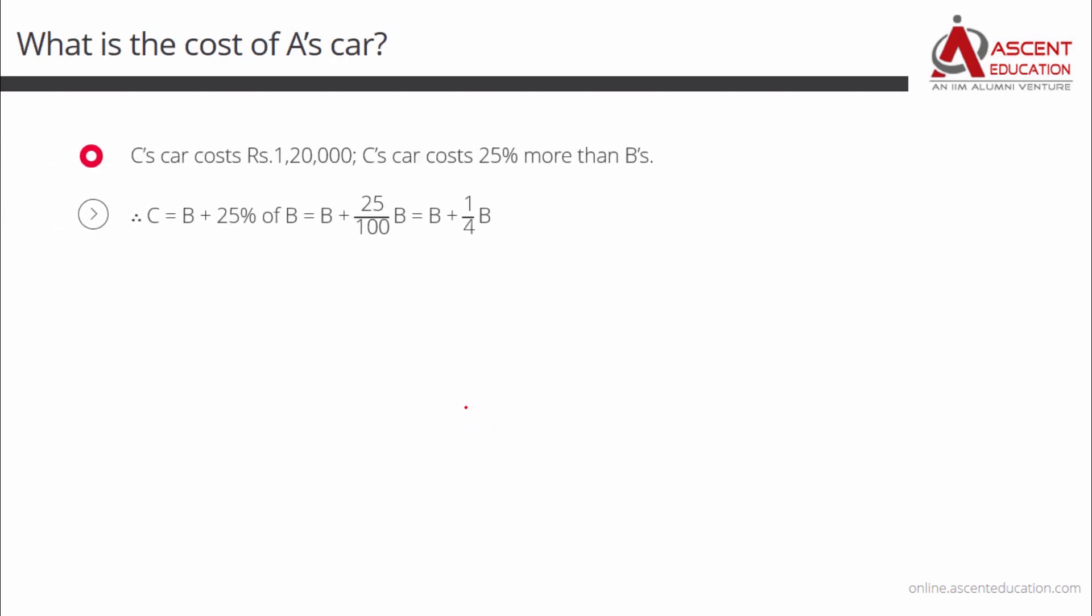Take the information and frame equations one by one. C's car is costing 1 lakh 20,000. The comparison between C's and B's car is this: C's car is 25 percent more than B's car. So let us say C is the cost of C's car. C is equal to B plus 25 percentage of B, because the cost of C's car is 25 percent more than what was the cost of B's car. 25 percent can be written as 25 by 100. So we can say C is equal to B plus 25 by 100 of B.